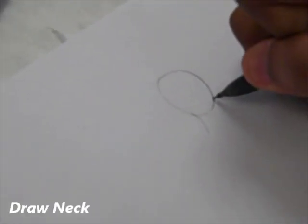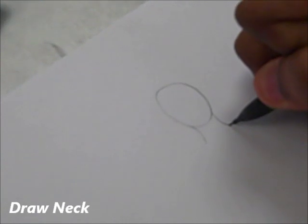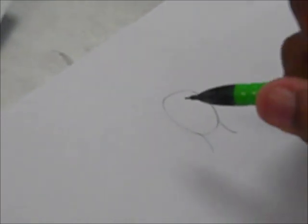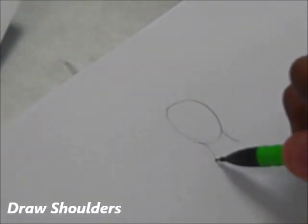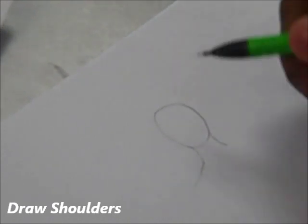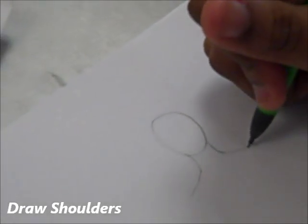Extend two shorter lines underneath your oval. Draw a short curvy line at each side. In a sense it should be like a slant, a slant for your shoulders.